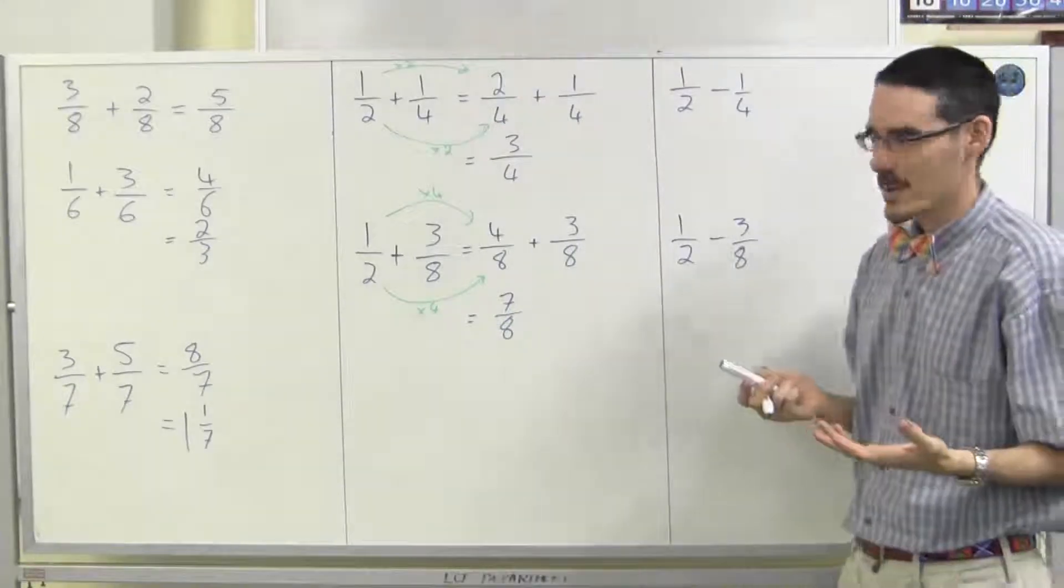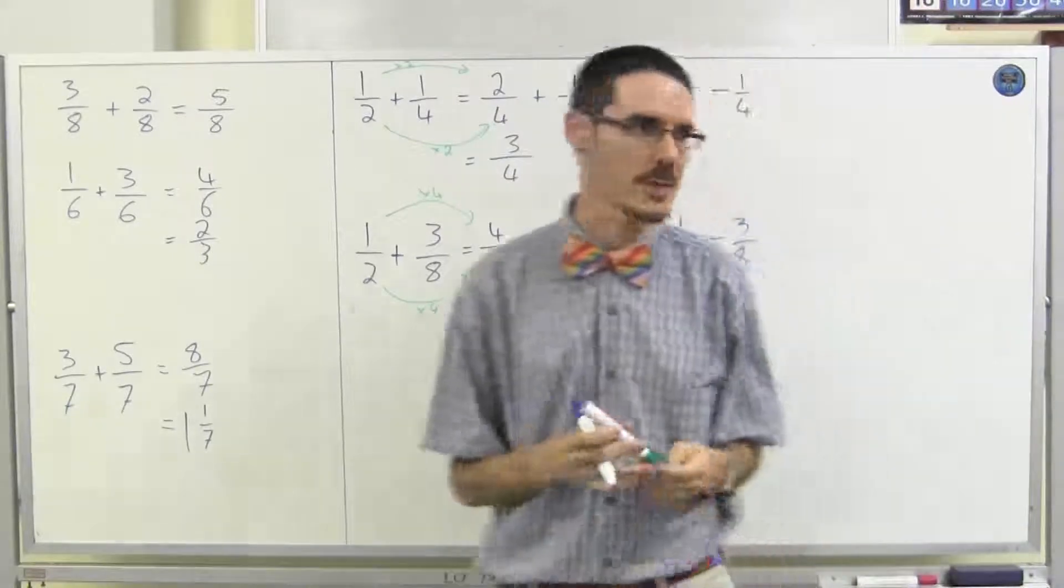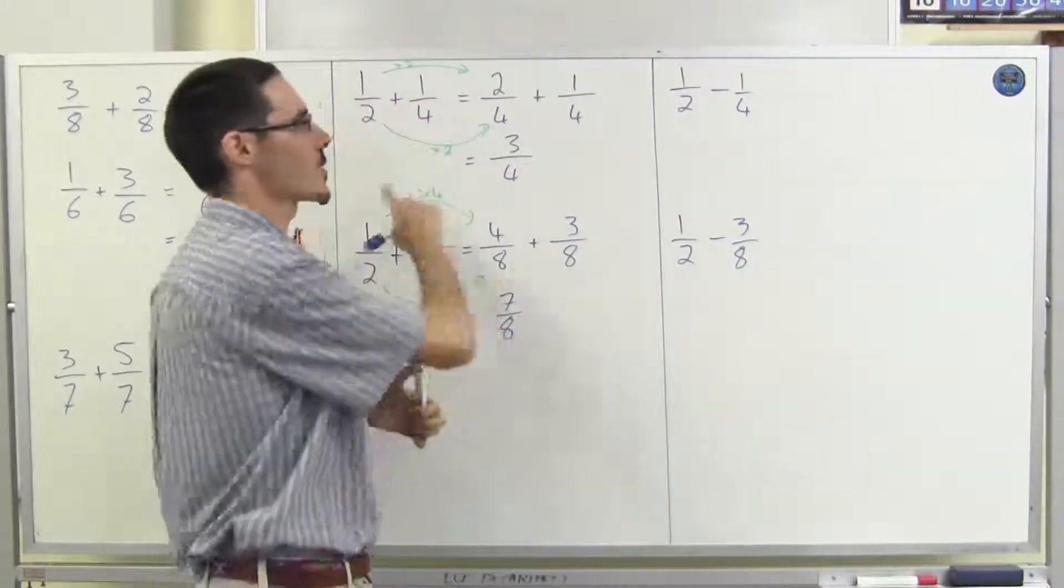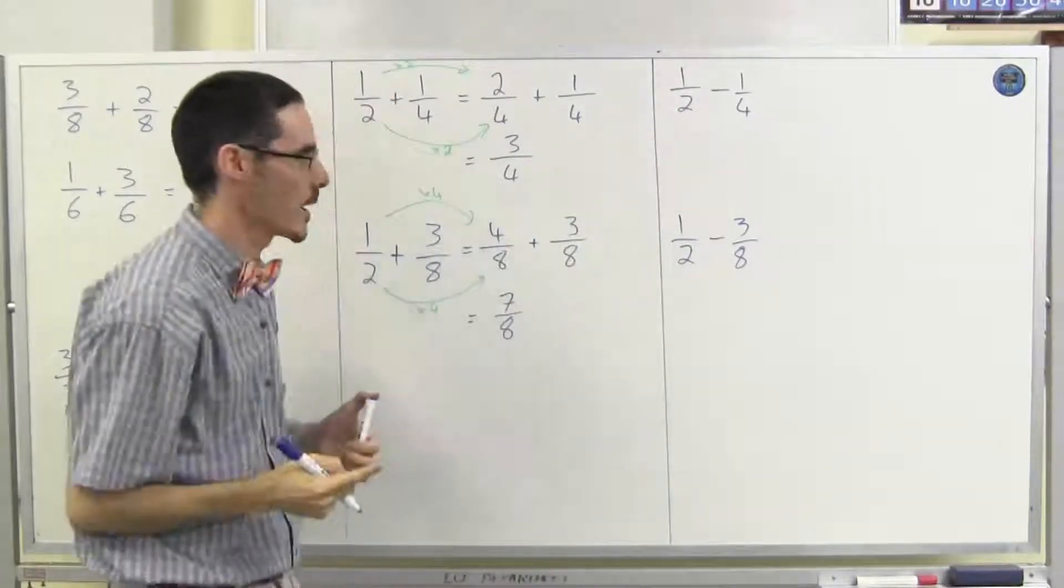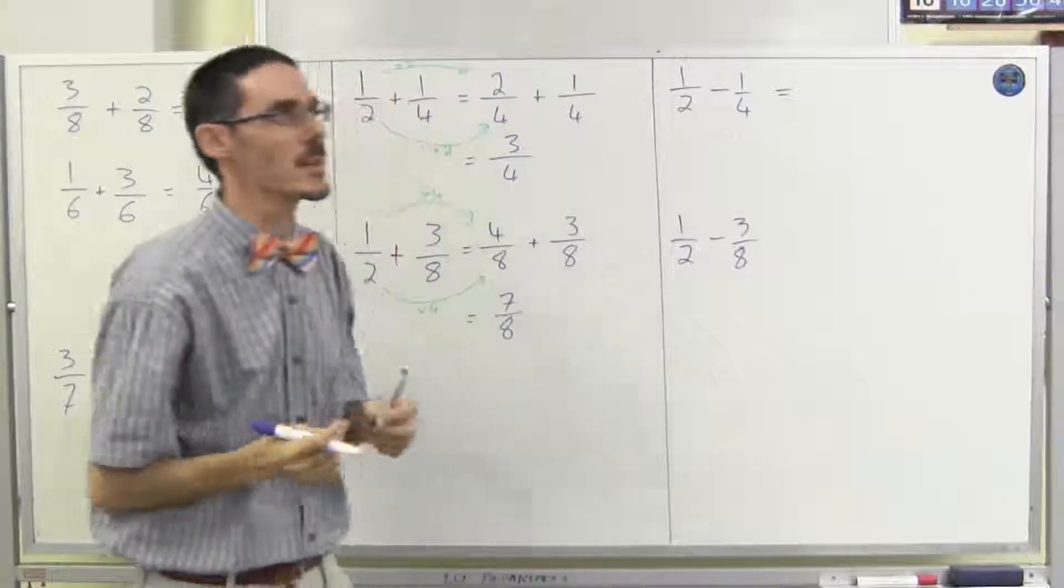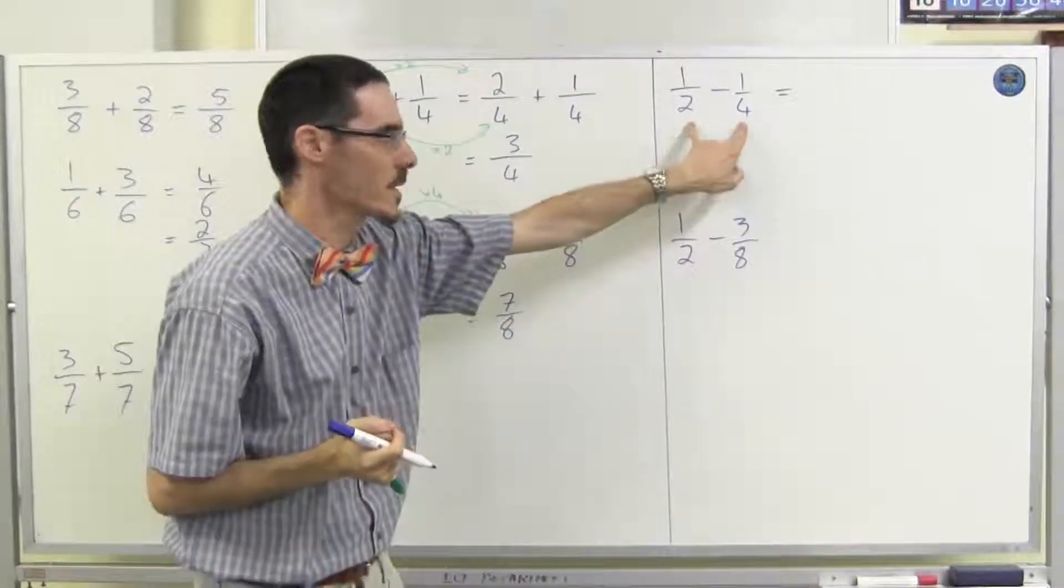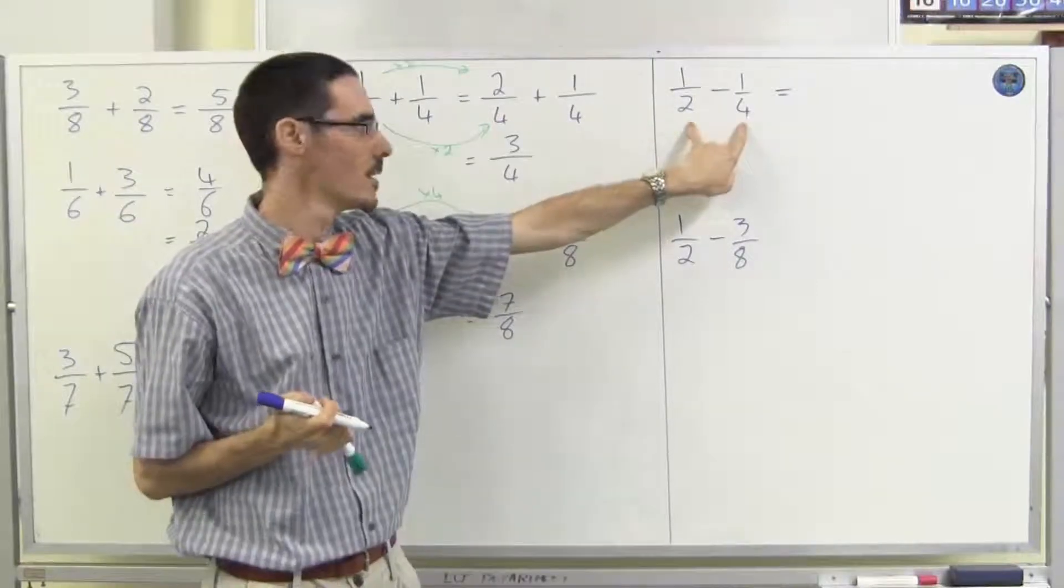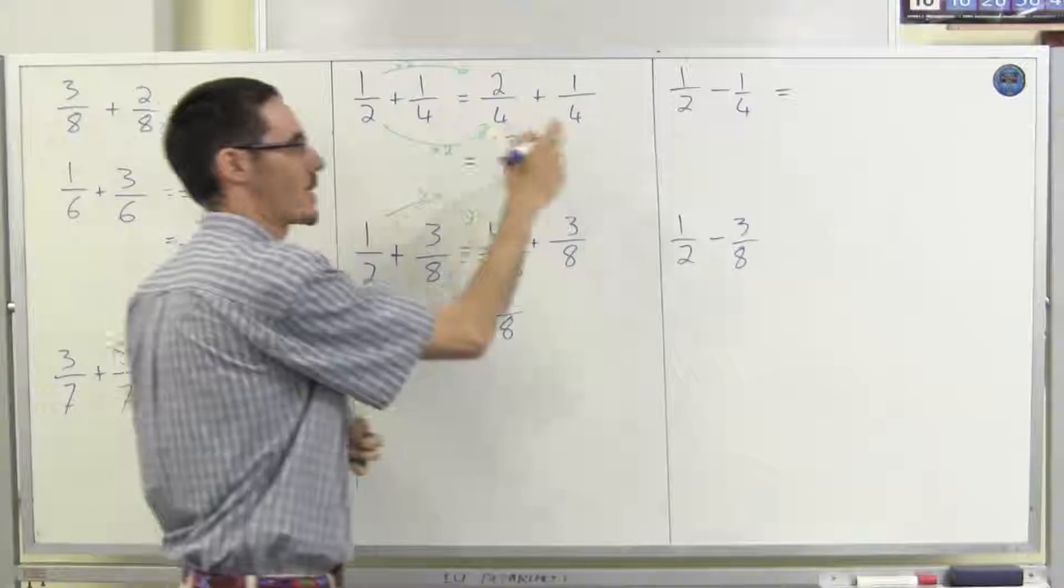Now, all of the ones I've shown you so far have been addition. Exactly the same technique works for subtraction. Let's try these again with subtraction. Okay, I need two fractions. I need the two fractions to have the same denominator. What number would I use as the lowest common denominator for halves and quarters? Well, we just worked it out. We have to use quarters.